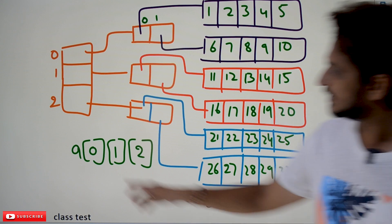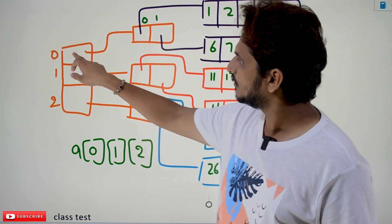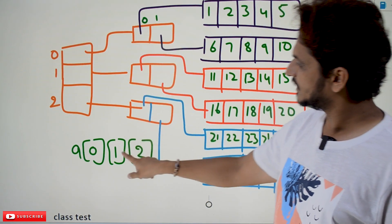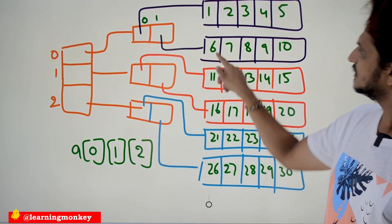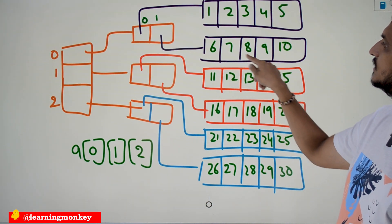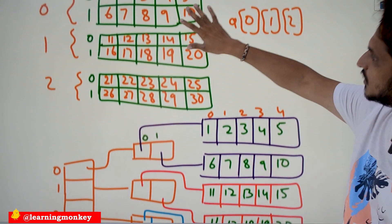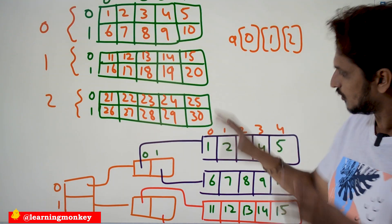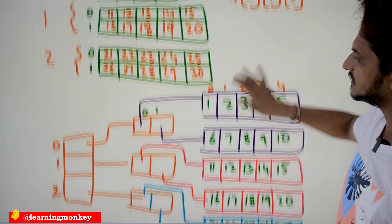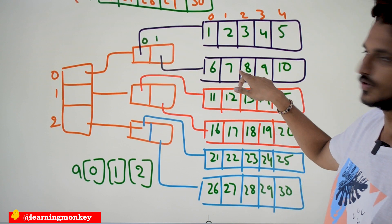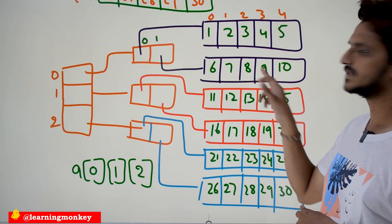If you want to access element a[0][1][2] in RAM: a[0] points to the first two-dimensional array; in that, index 1 points to the corresponding row array; in that array, index 2 means the 0th position, 1st position, 2nd position — so 8 is going to be displayed. This is how the visualization maps to actual memory.